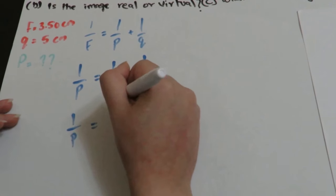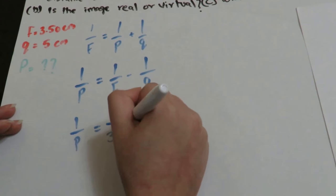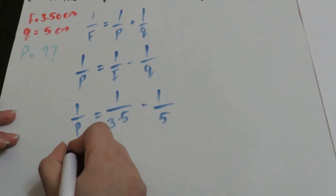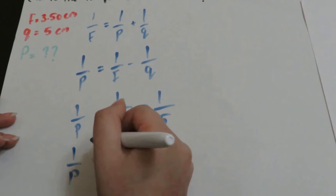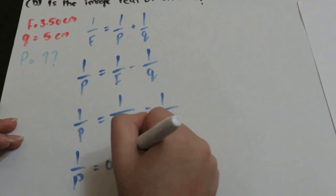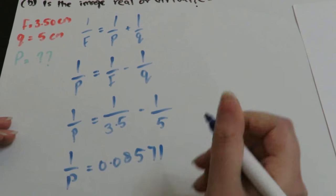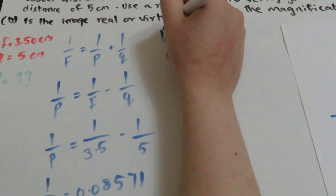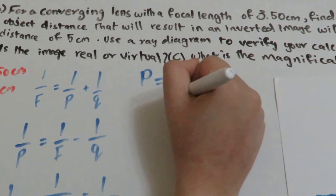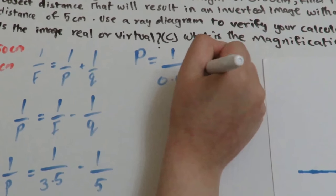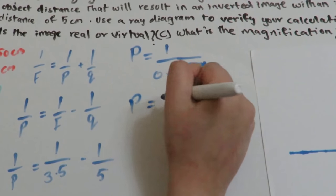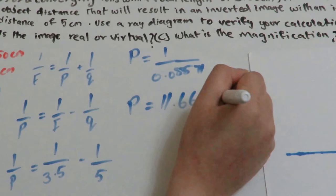So 1 over P equals 1 over 3.5 minus 1 over 5. The answer is 0.08571. To find P, we will make it 1 over 0.08571, which equals 11.66 cm.